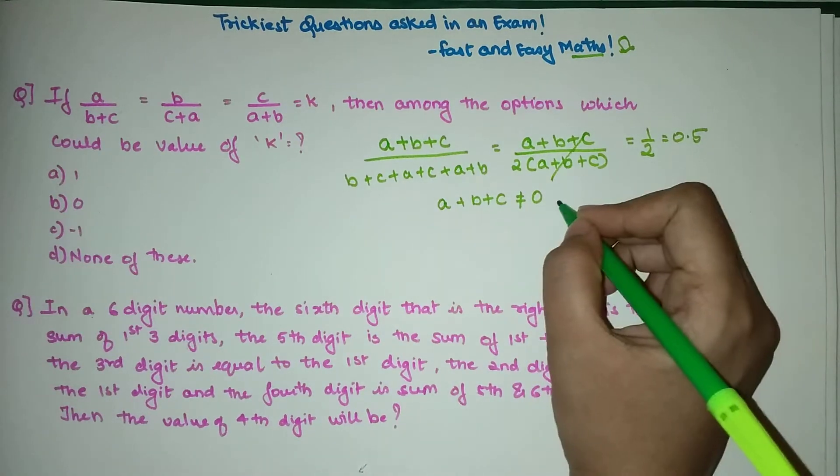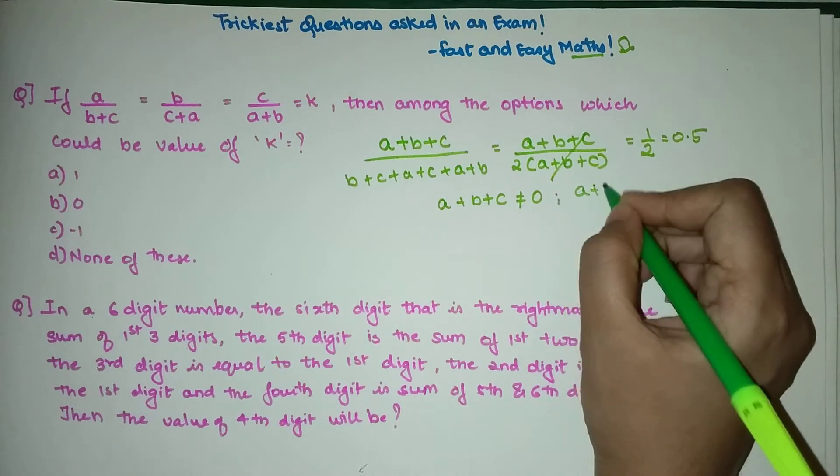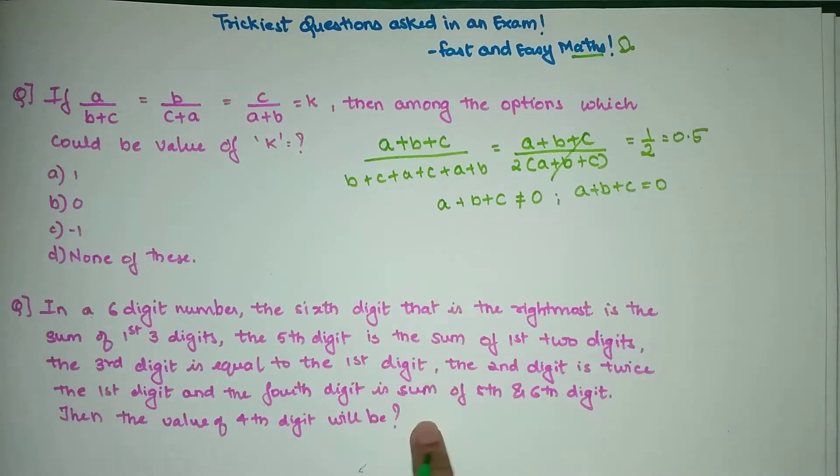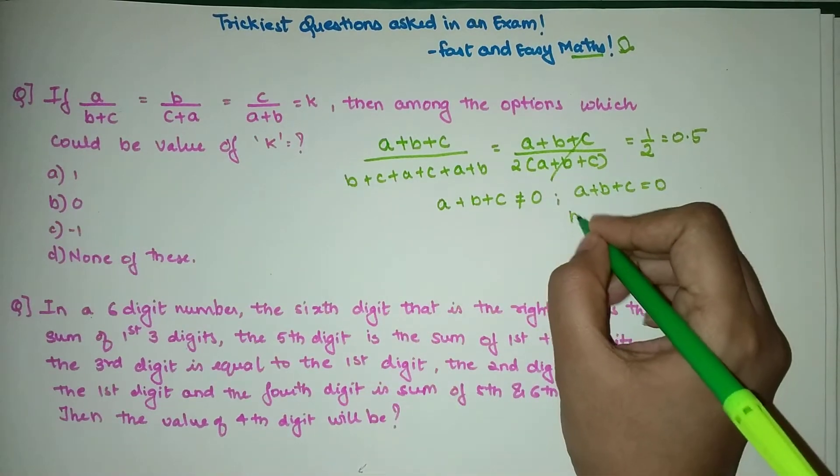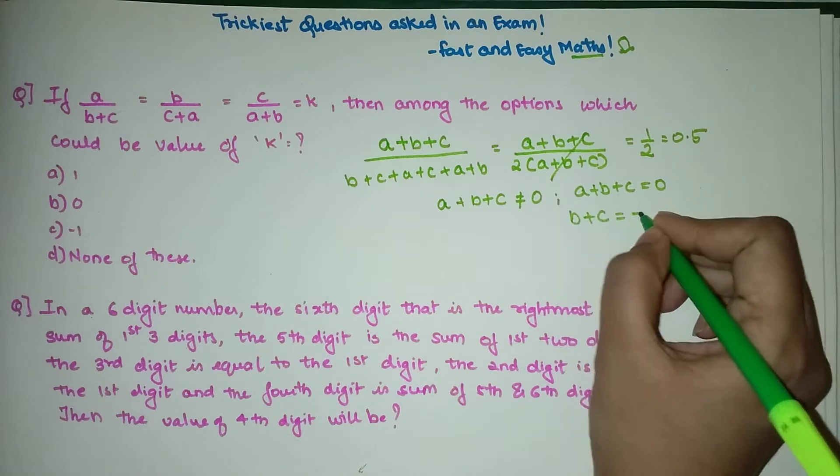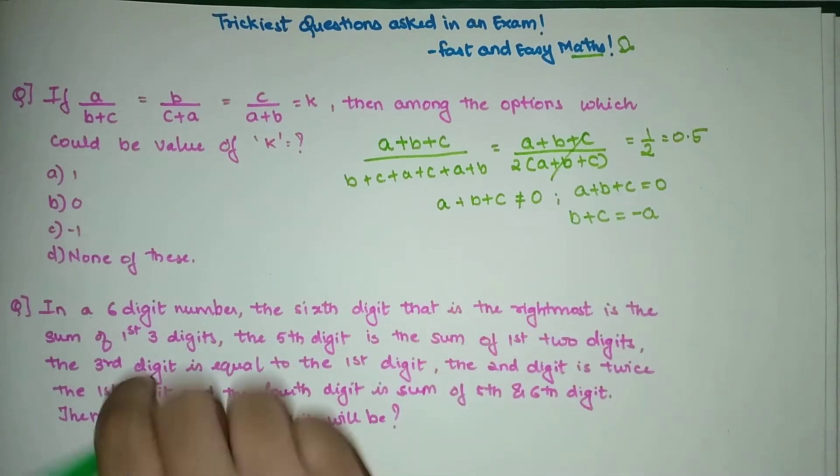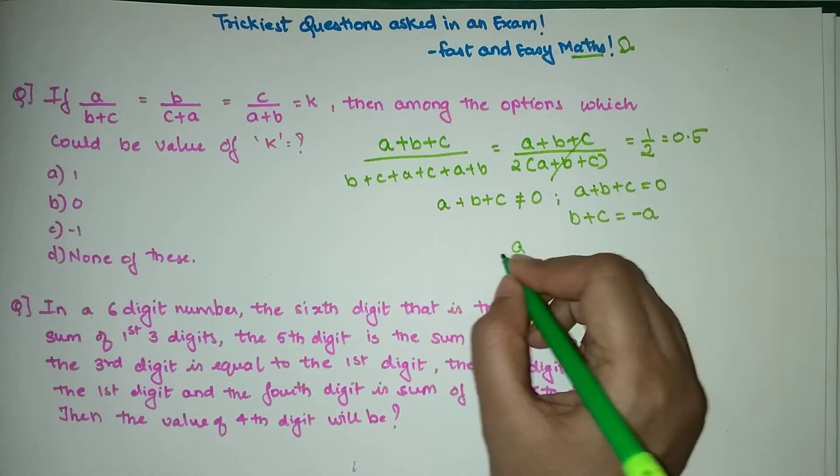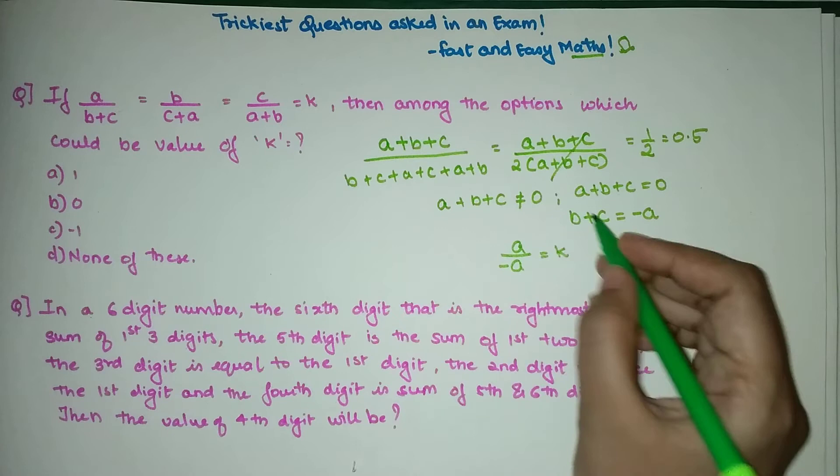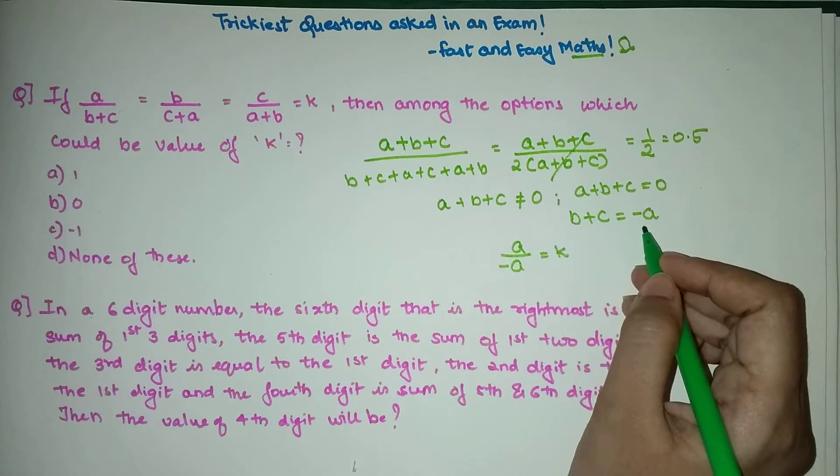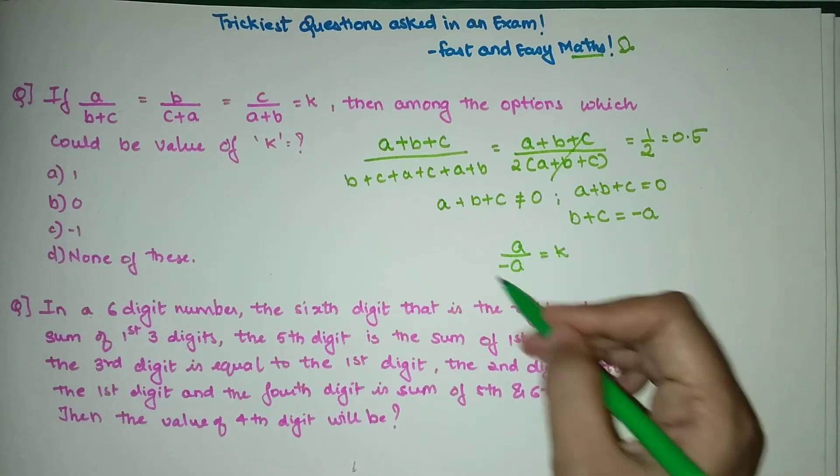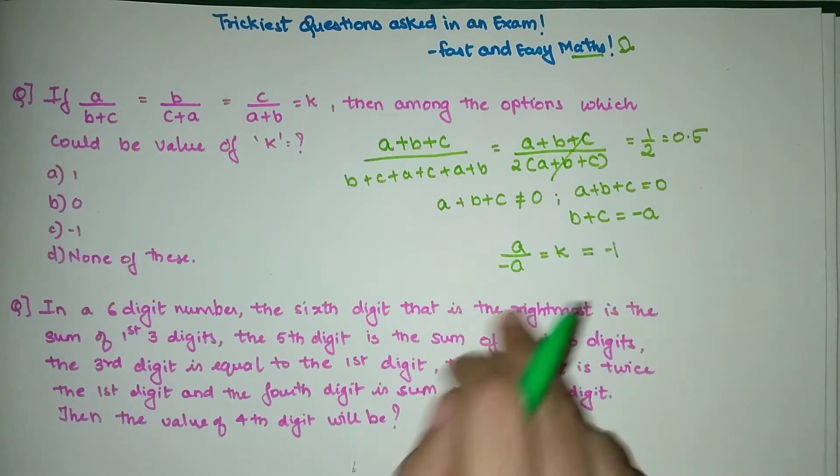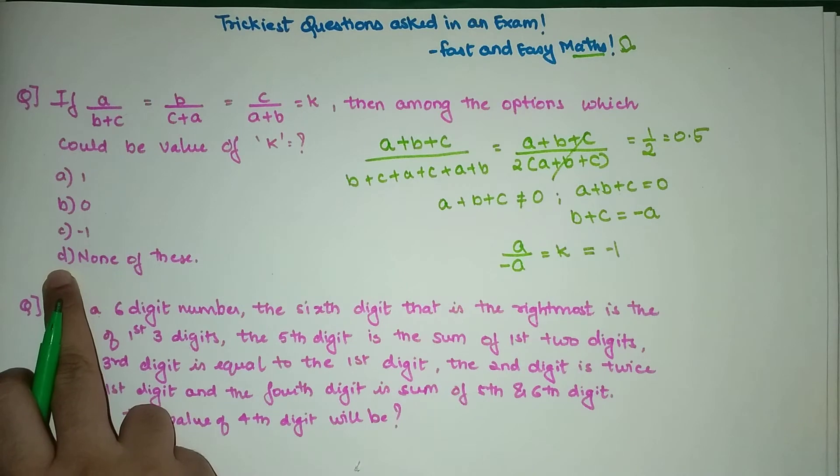But what if actually A+B+C would be 0? If that was the case, B+C would be -A. When you look at your first fraction, A/(-A) = K, because B+C = -A. So substituting that, K can be -1, and -1 is definitely a part of your options.